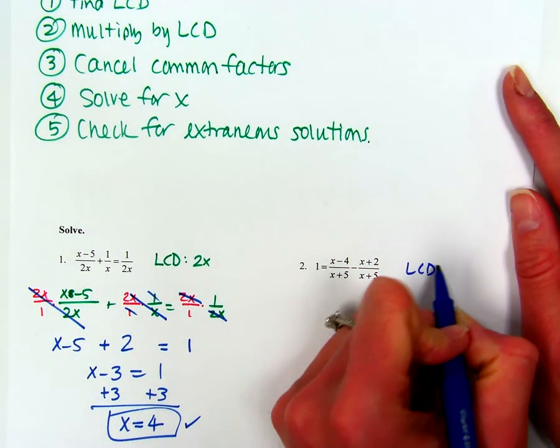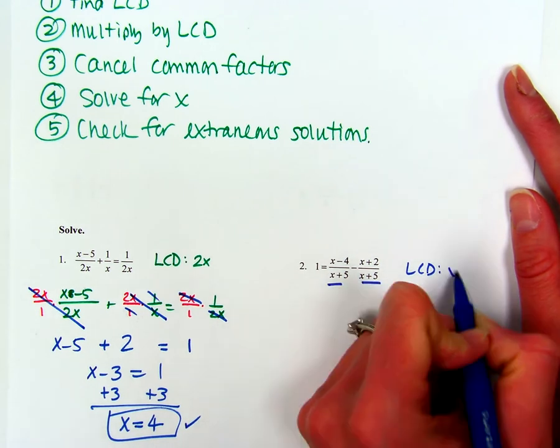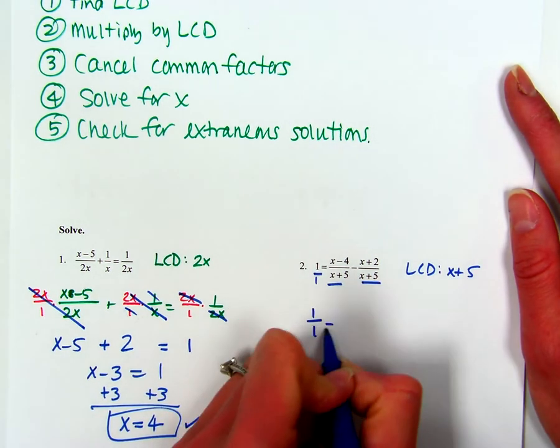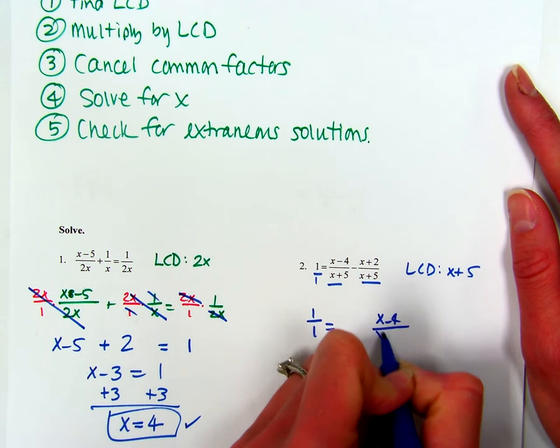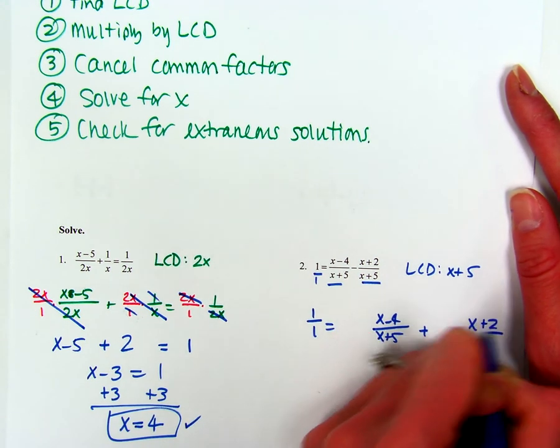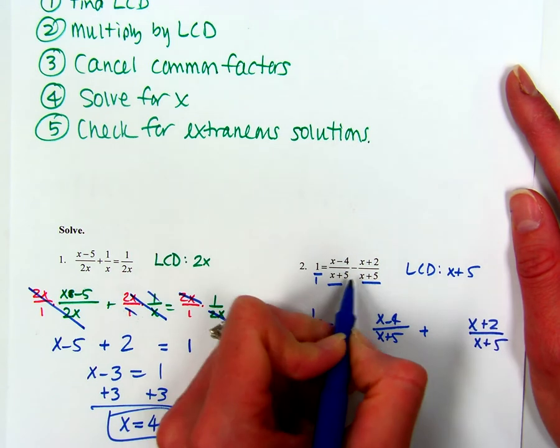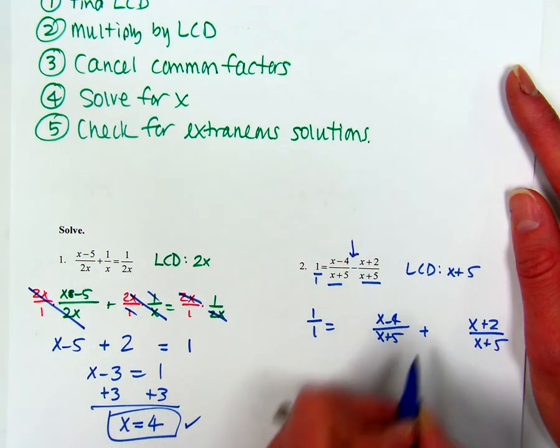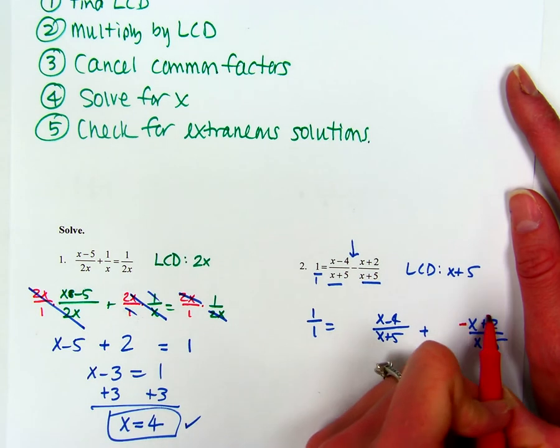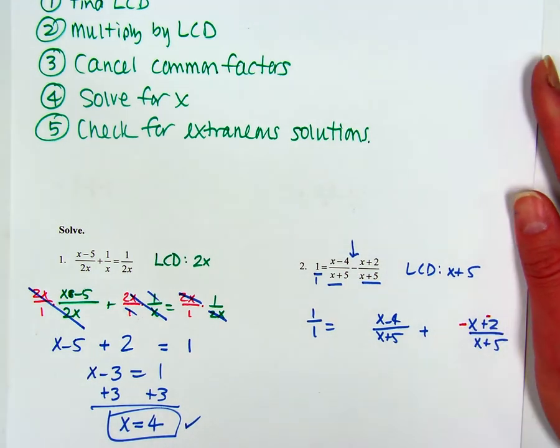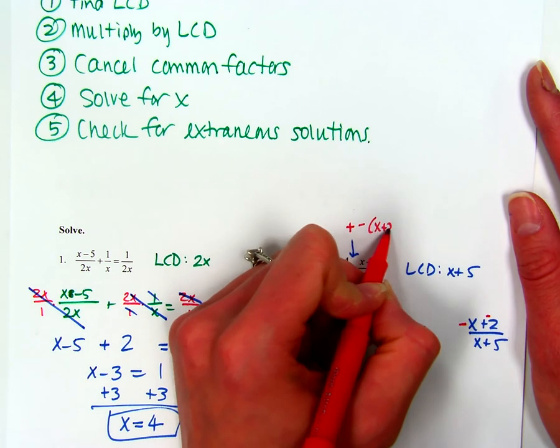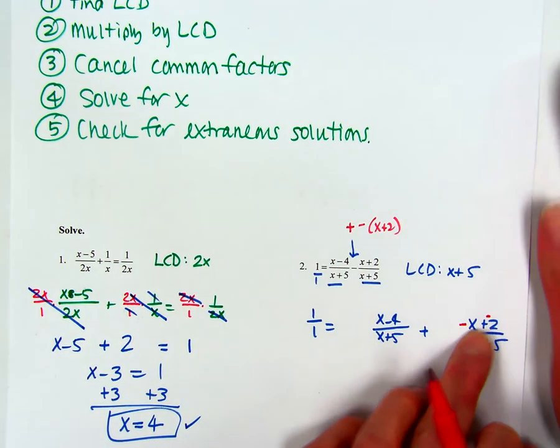All right, look for your LCD. These are both the same, so my LCD is just X plus 5. This denominator is just 1. So I'm just rewriting the original equation. All right, so notice this is a minus. I'm going to change this to plus a negative. So I'm going to make this a negative and a negative. I think that will make it a lot easier. So make that add a negative X plus 2. That's where I got this from.